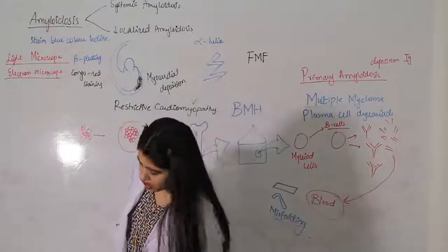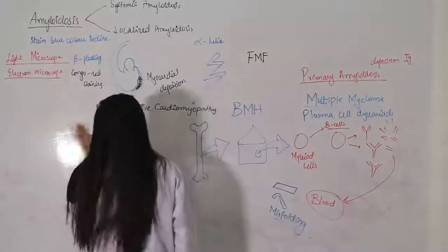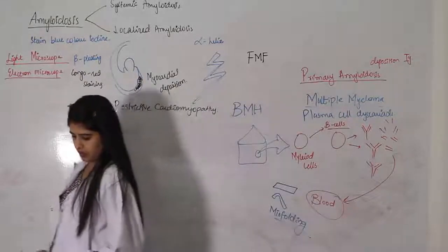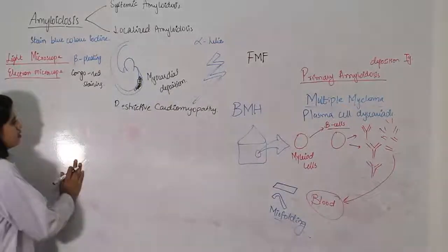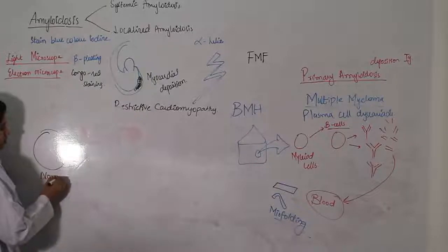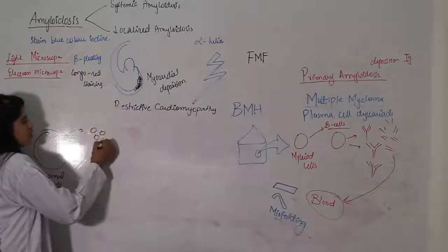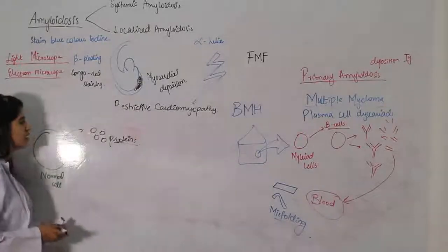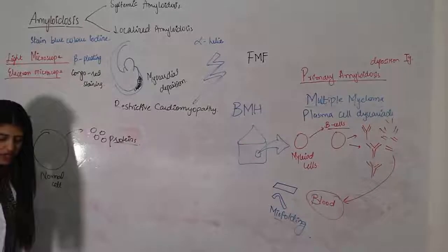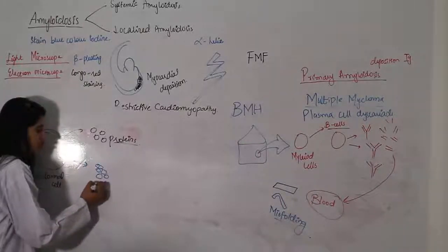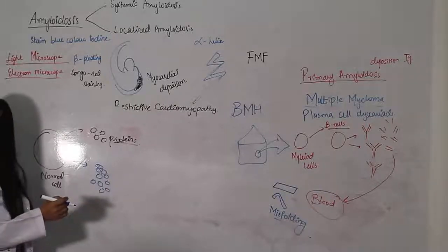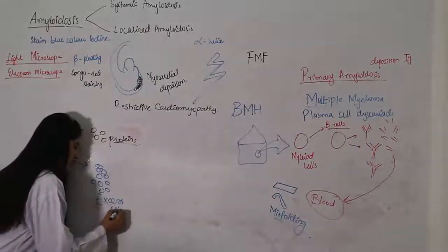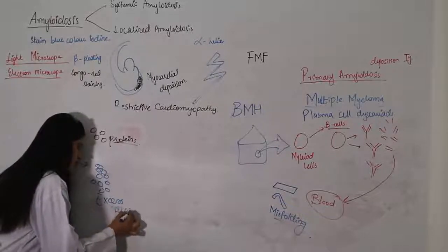Now what we are going to talk about is localized amyloidosis. A normal cell produces normal proteins - you know how proteins are formed by ribosomes. But due to certain conditions, this starts doing overproduction and misforming, or excess forming. Both of these conditions will be discussed further.